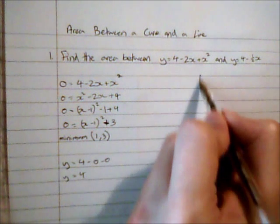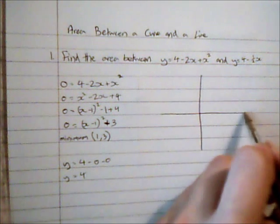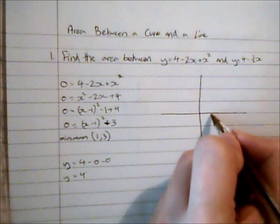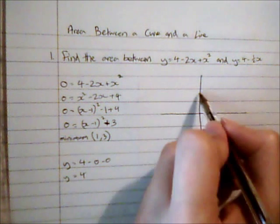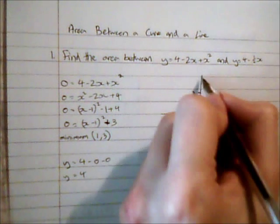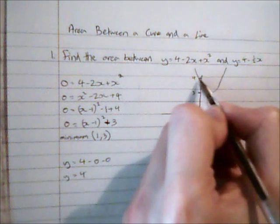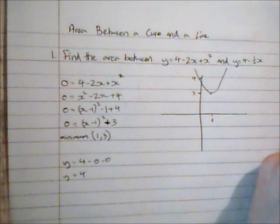So I'm going to do a sketch. So if I have a minimum here at 1, 3 and then it intersects at 4, I'm going to get my curve looking something along those lines.